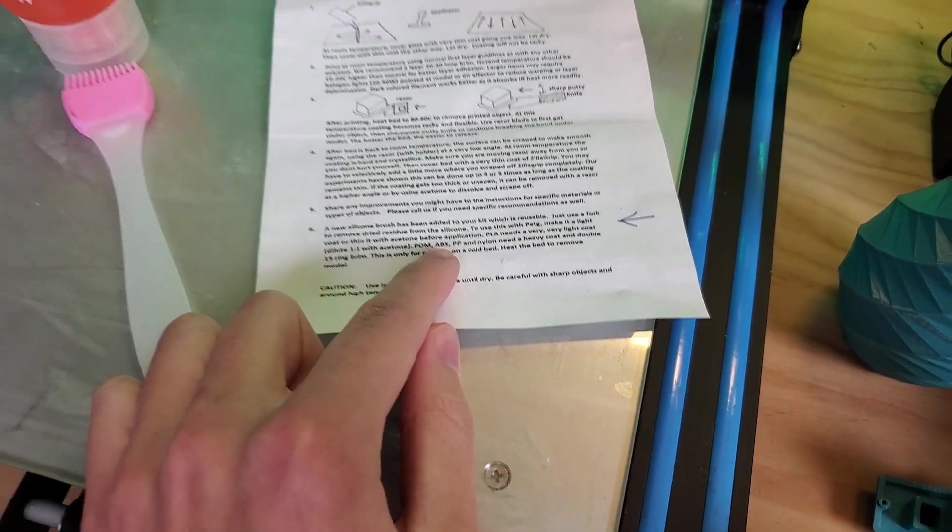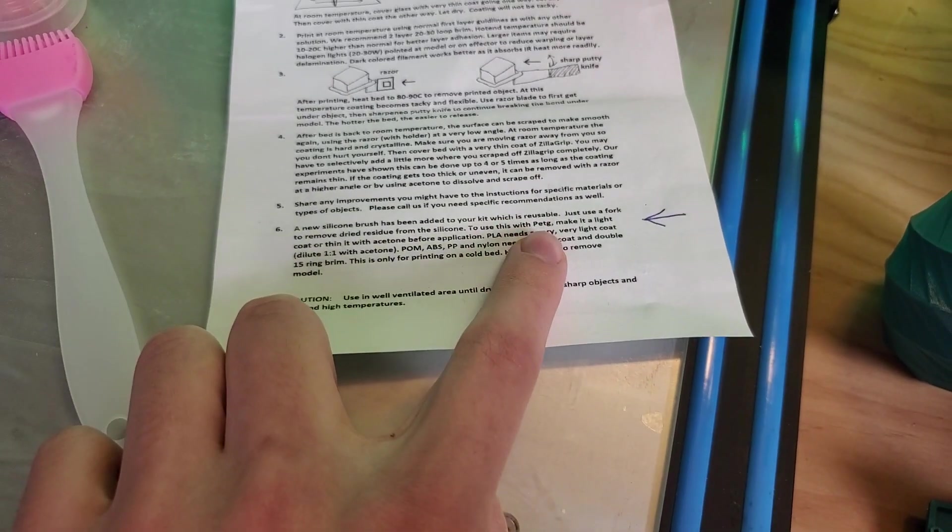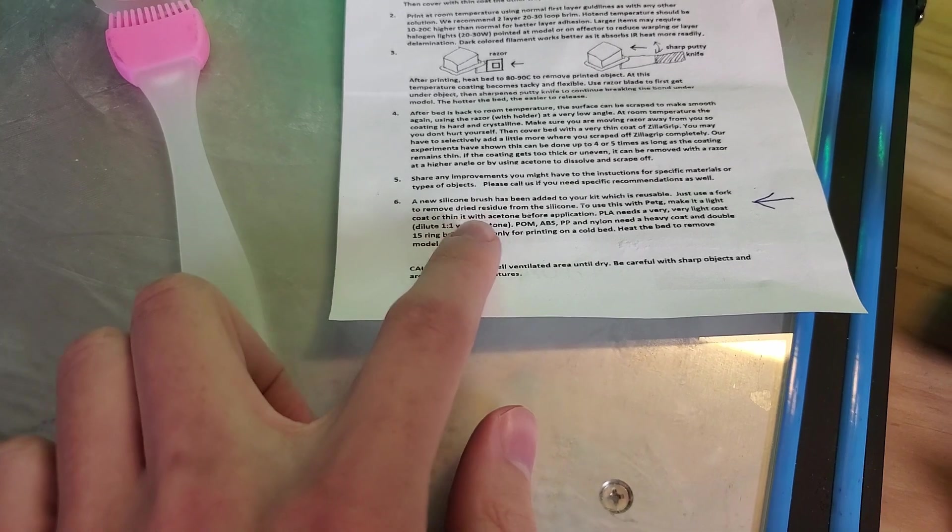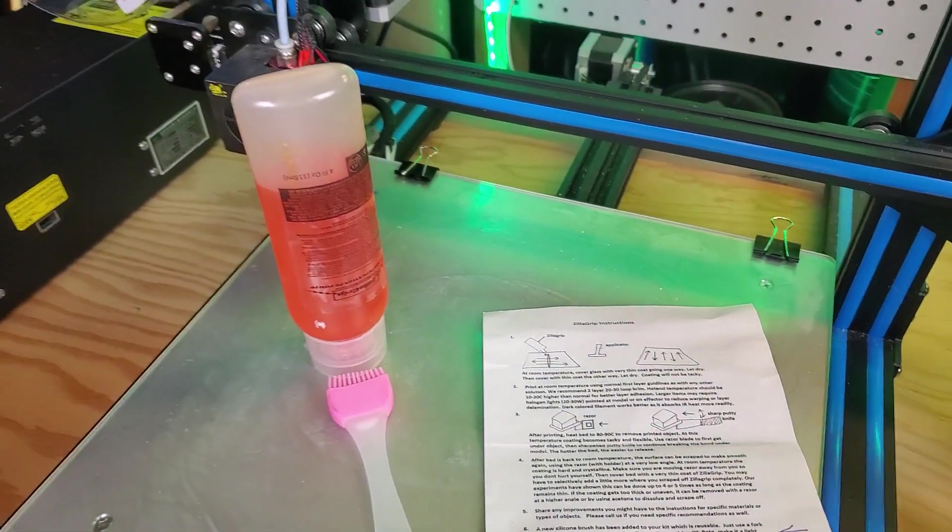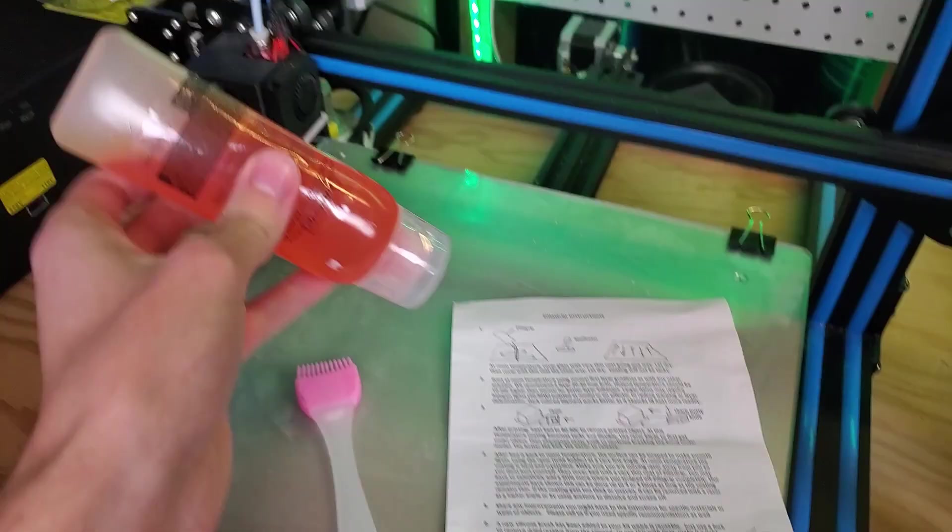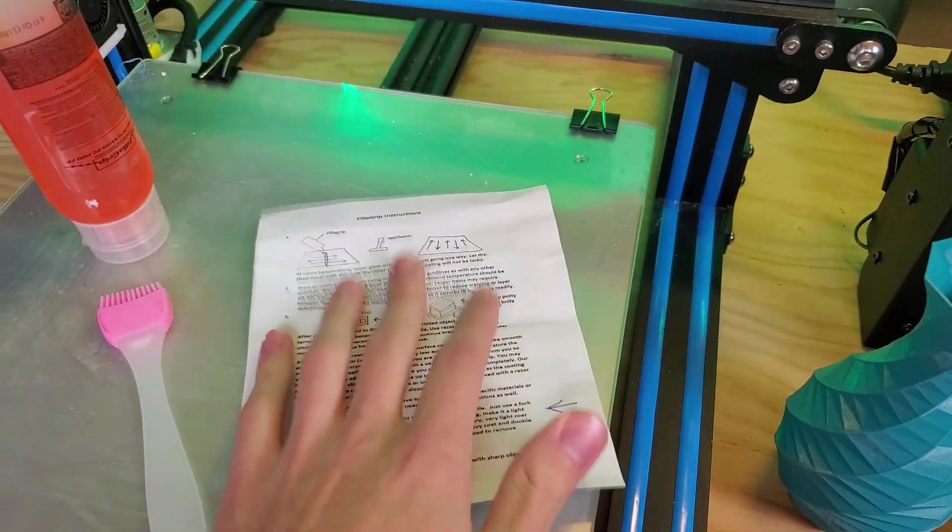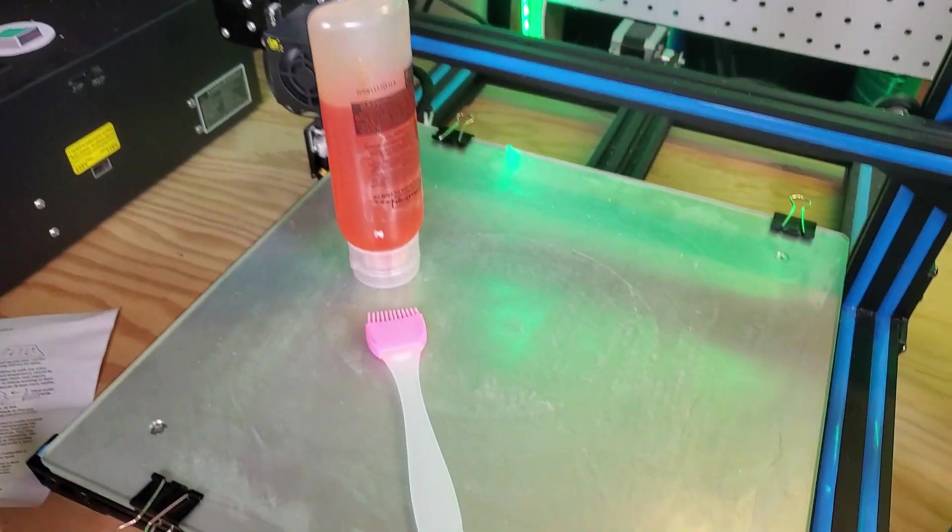To print with PETG, make a light coat or thin it with acetone before application. I don't have acetone right now, so I'll be using a light coat of this. If you do get this, make sure to read this in full and the safety sheet. I'm going to put that on the side for now and we're going to apply this on my glass bed.